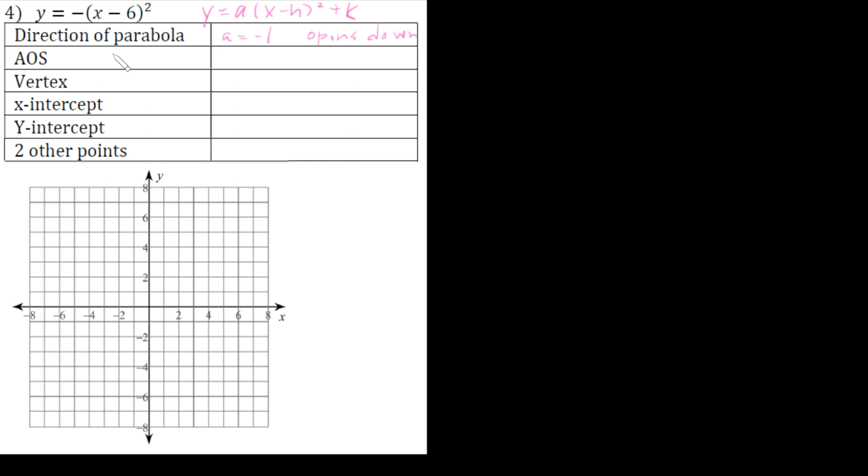Now the axis of symmetry from vertex form is x equals h, so x equals negative six. But remember, when we take the negative six out, we have to flip the sign. Let's go ahead and graph that.